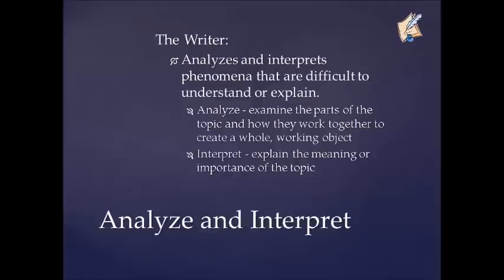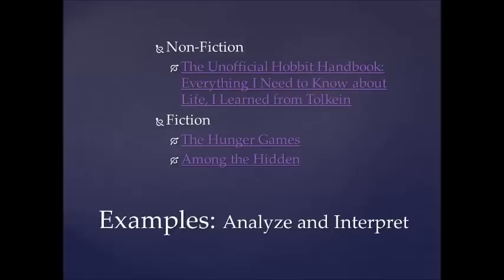The next one, A: Analyze and Interpret. In this one, the author will analyze and interpret a phenomenon that is difficult to understand or explain. They analyze it by looking at all of the parts to see what makes it up and how those parts work together to form a complete working unit. Then they interpret or explain the meaning or the importance of that particular topic. Examples include The Unofficial Hobbit Handbook, Everything I Needed to Know About Life I Learned From Tolkien, and the fiction books The Hunger Games and Among the Hidden.